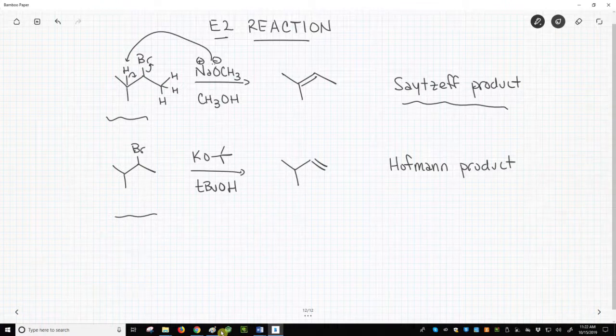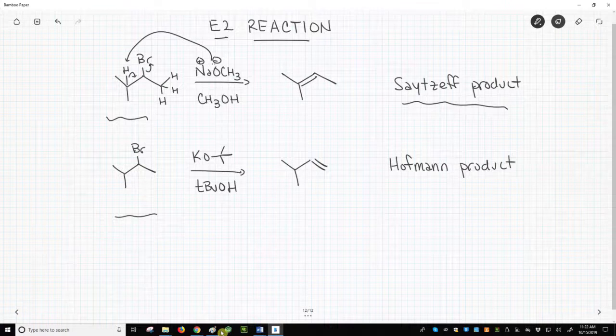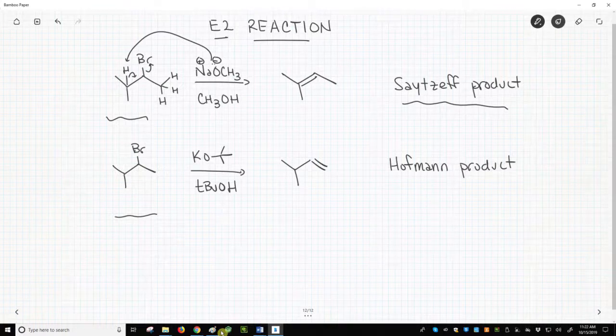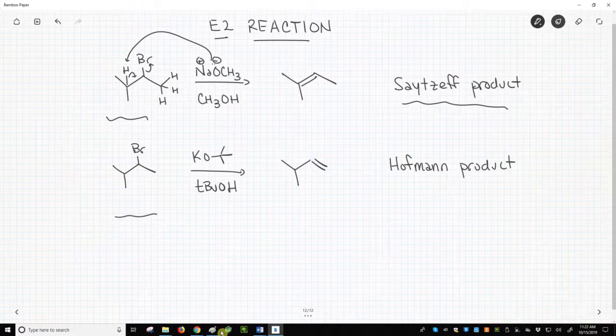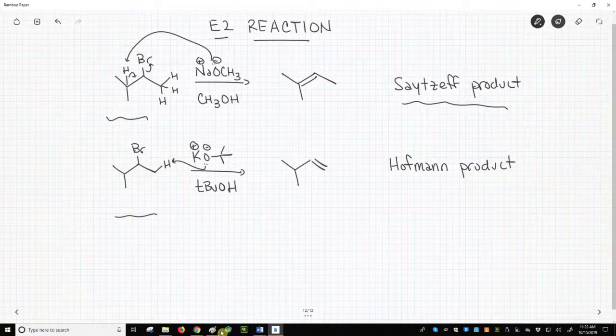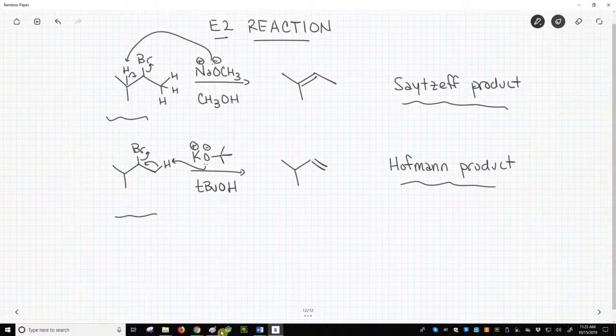The steric hindrance of t-butoxide, the classic bulky base, leads to removal of a less hindered beta-hydrogen and the formation of the Hofmann product, the less highly substituted alkene.